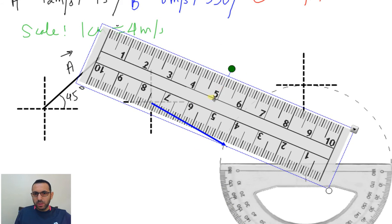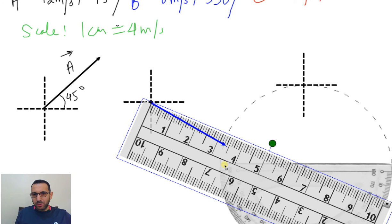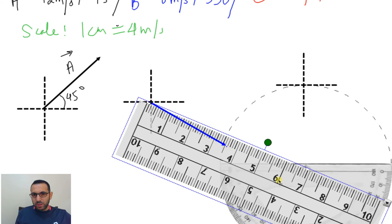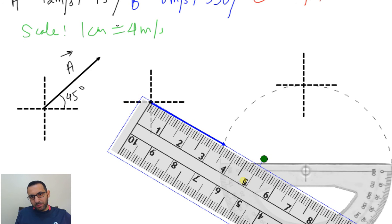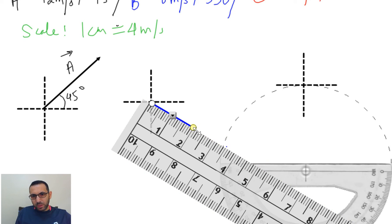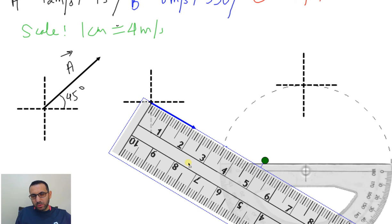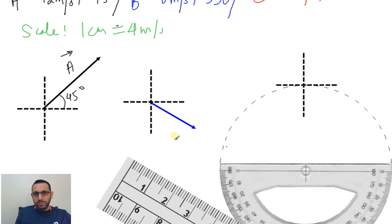Now I rotate the ruler and measure the length — exactly what you have to do on your paper using the ruler and protractor. Of course it's much easier on paper. I want 2 centimeters, taking it back all the way. This is 2 centimeters — so this is vector B. The angle starts from the positive x-axis all the way down to B, which is 330 degrees.